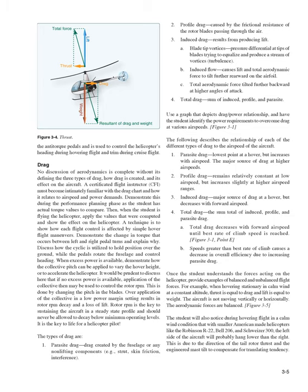The types of drag are: 1. Parasite drag — drag created by the fuselage or any non-lifting components, for example strut, skin friction, interference. 2. Profile drag — caused by the frictional resistance of the rotor blades passing through the air. 3. Induced drag — results from producing lift, including blade tip vortices and induced flow which causes the lift and total aerodynamic force to tilt further rearward on the airfoil. 4. Total drag — the sum of induced, profile, and parasite drag. Use a graph depicting the drag/power relationship and have the student identify the power requirements to overcome drag at various airspeeds (Figure 3-1).